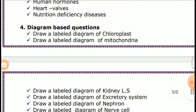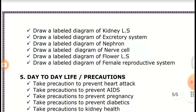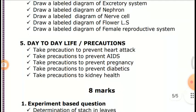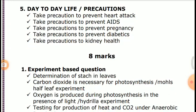Four-mark Diagram-based questions: Draw and label diagrams of Chloroplast, Mitochondria, Kidney, Excretory System, Nephron, Nerve Cell, Flower, and Female Reproductive System. Day-to-day life precautions include: precautions to prevent heart attack, AIDS, Pregnancy, Diabetes, and Kidney health.